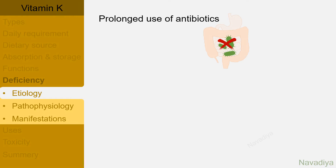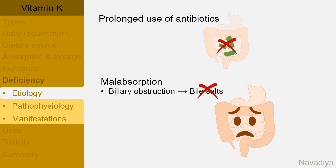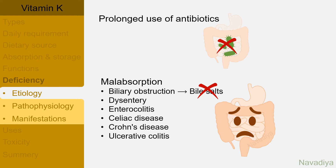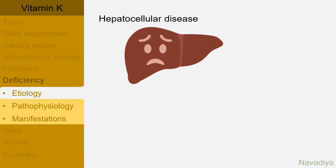Prolonged use of antibiotics can suppress intestinal bacteria and cause vitamin K deficiency. Conditions causing malabsorption, like biliary obstruction which impairs access to bile salts, dysentery, enterocolitis, celiac disease, Crohn's disease, ulcerative colitis, and resection of intestine can also cause vitamin K deficiency. Hepatocellular disease can lead to manifestations of vitamin K deficiency; however, this is due to incapability of liver cells to synthesize clotting factors rather than actual deficiency of vitamin K.